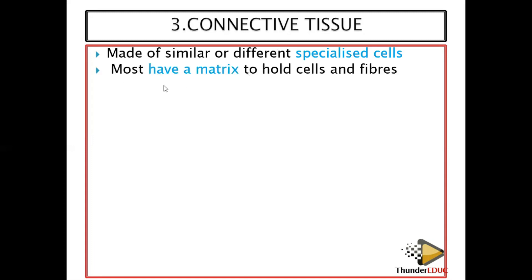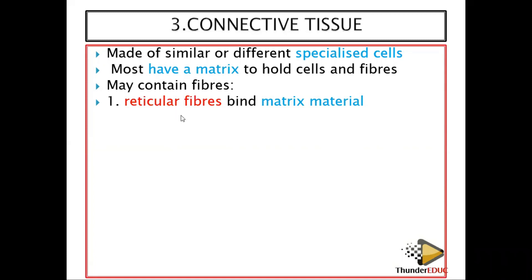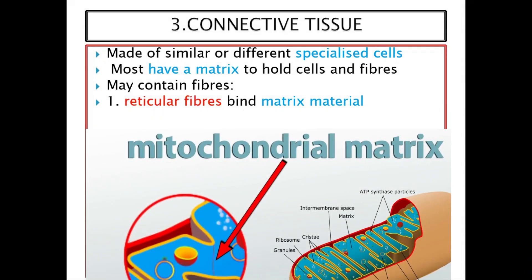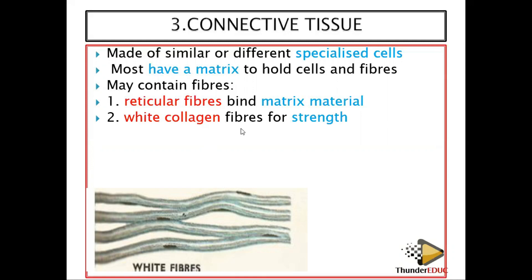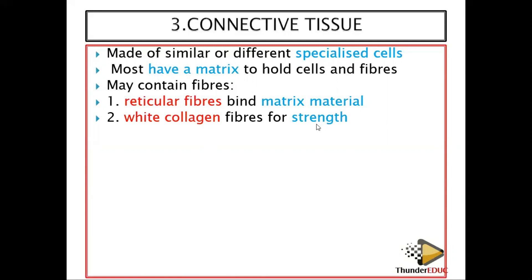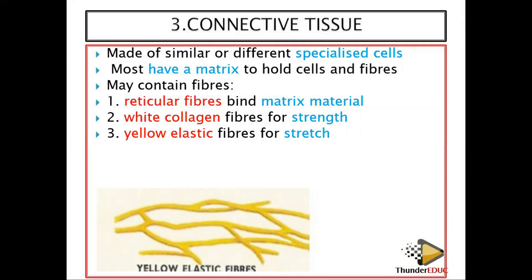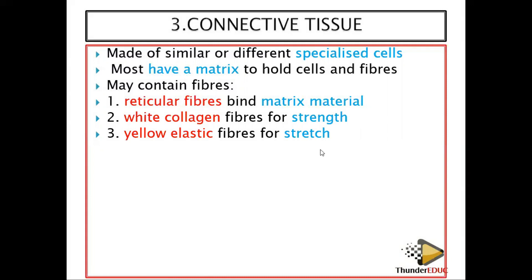Most connective tissues — though not all — may contain fibers. They may have what's called a matrix, which is like a thick fluid. Think of porridge as an example of a matrix. Number two, there is white collagen, which is very important for strength — it makes muscles strong. Number three, there are yellow elastic fibers, which can extend, and are very important for stretching.